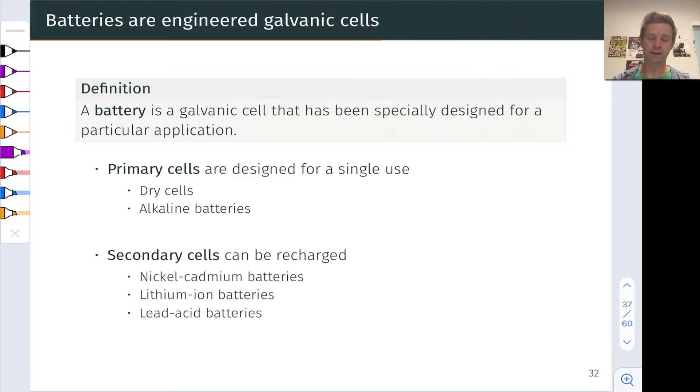Primary cells are designed for a single use and the most common and popular type of primary cell is the alkaline battery which you can buy at the grocery store. These are the Duracell, Energizer, long cylindrical batteries that you can buy. Dry cells are another important type of primary cell designed for a single use without the ability to be recharged.